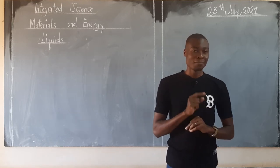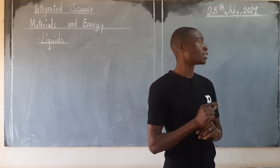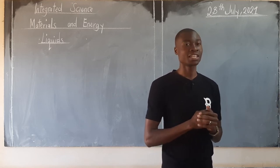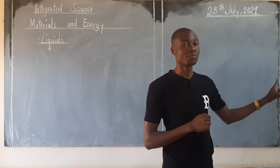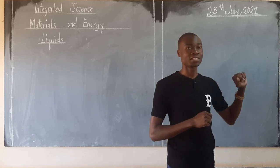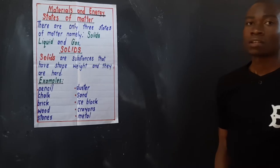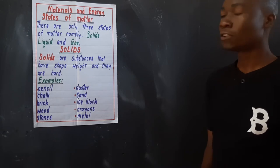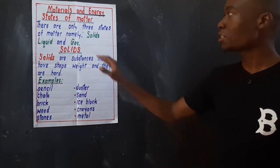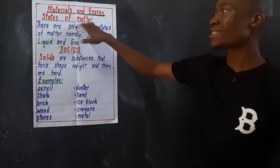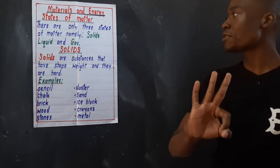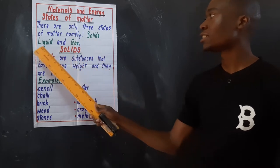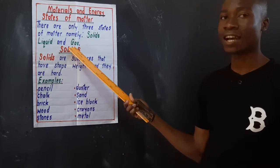Now, before we go further, I would love us to go through what we looked at last time so that we can pick it up from where we are going to end. So last time we were looking at materials and energy, of which we discussed under materials and energy: the states of matter. We said there are three states of matter, which is solids, liquids, and gas.